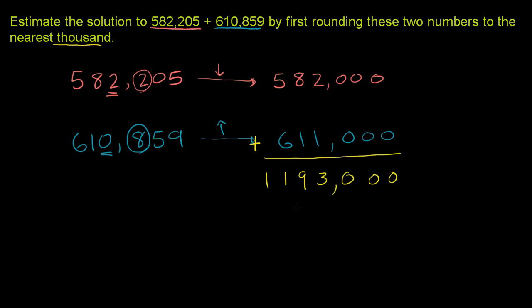And so we are left with, put a comma every third digit, 1,193,000, which is our estimate. The whole reason why this is useful is if someone were to give these numbers to you and you have to do it in your head, it's hard to add these whole numbers. But you might be able to do 582 plus 611, knowing everything is in thousands. So it allows you to do things in your head a little bit easier when you round, and then you estimate the sum of the rounded numbers.